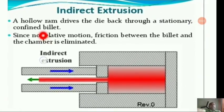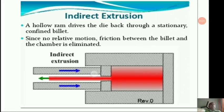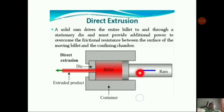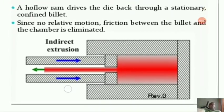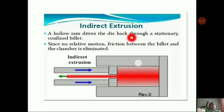In indirect extrusion, a hollow ram drives the die back through a stationary confined billet. In direct extrusion, the ram moves in the same direction as the moving metal. But in indirect extrusion, the ram moves in one direction while the metal moves opposite to the direction of the ram. You must not confuse these two in your examination. Since there is no relative motion, friction between the billet and the chamber is eliminated — that is the key difference between direct and indirect extrusion.